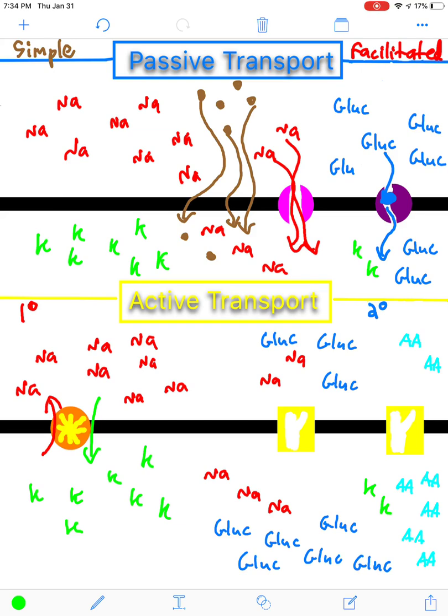So, in this case, I've got glucose, shown in blue, and I've got amino acids, shown in turquoise. Now, in the yellow squares, these are going to be transport proteins. Now, transport proteins can be symporters, which would mean the two molecules move in the same direction. Or they can be antiporters, meaning the molecules move opposite directions. So, the first thing I'll show you are going to be symport proteins.